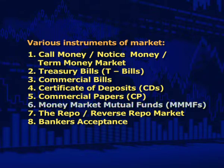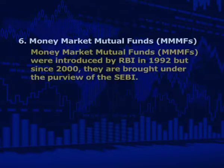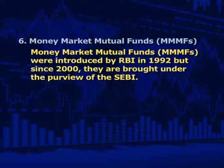It is easy to find buyers for firms with high credit ratings, and these securities are actively traded in the secondary market. Sixth is money market mutual funds (MMMFs). MMMFs were introduced by RBI in 1992, but since 2000 they are brought under the purview of SEBI. They provide additional short-term investment avenues to individual investors.